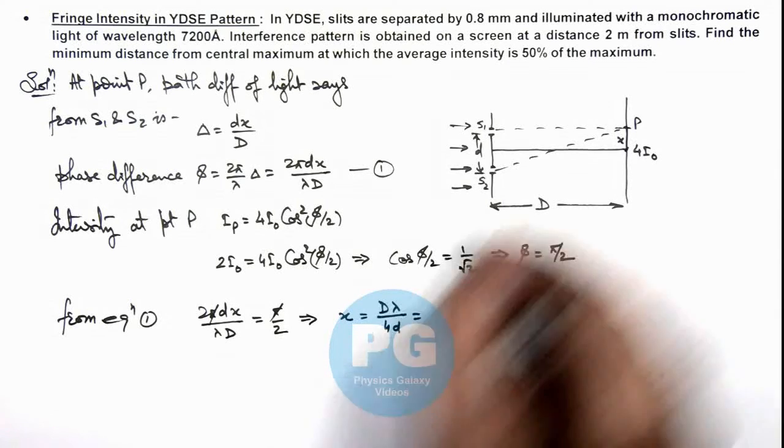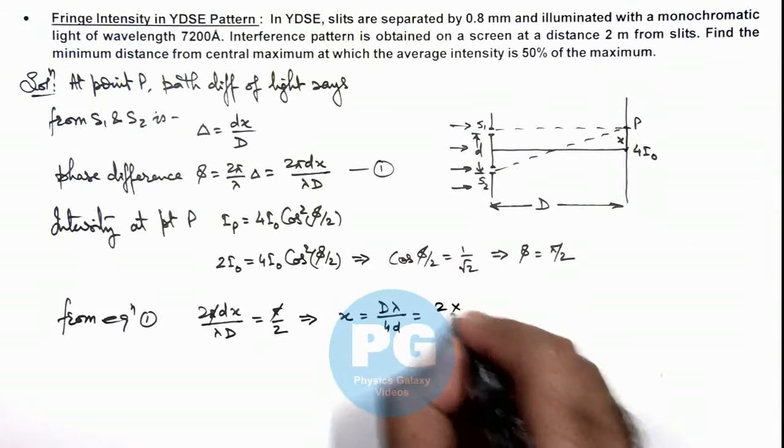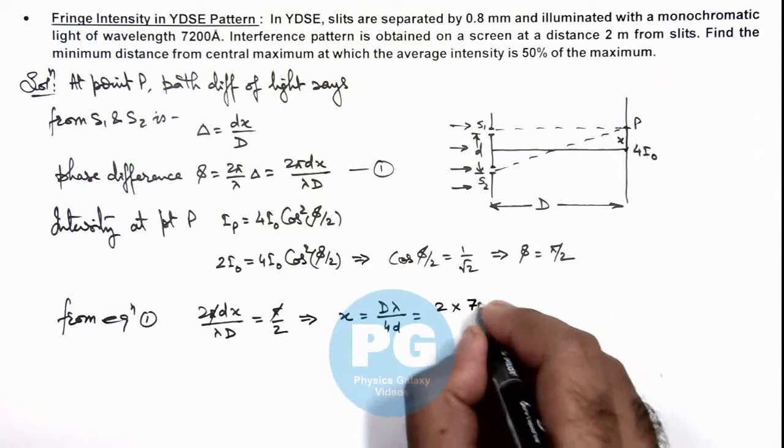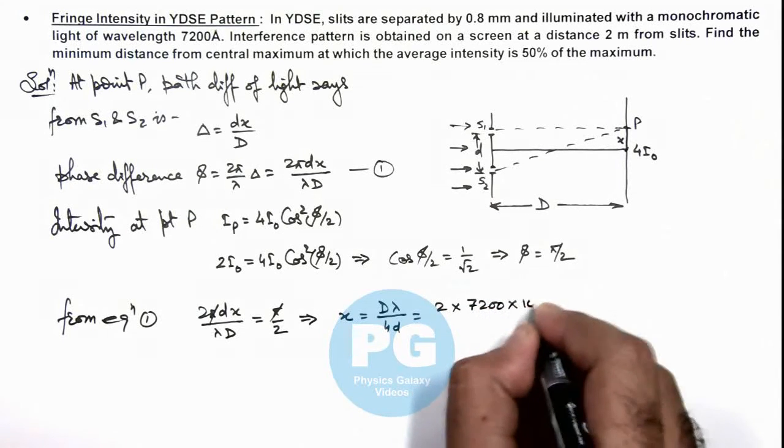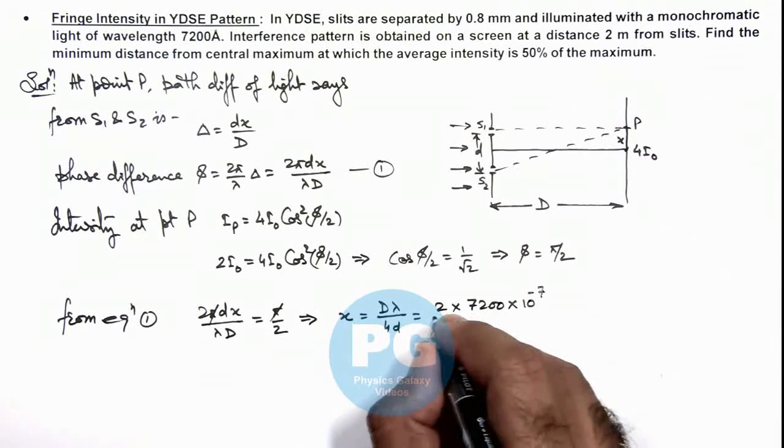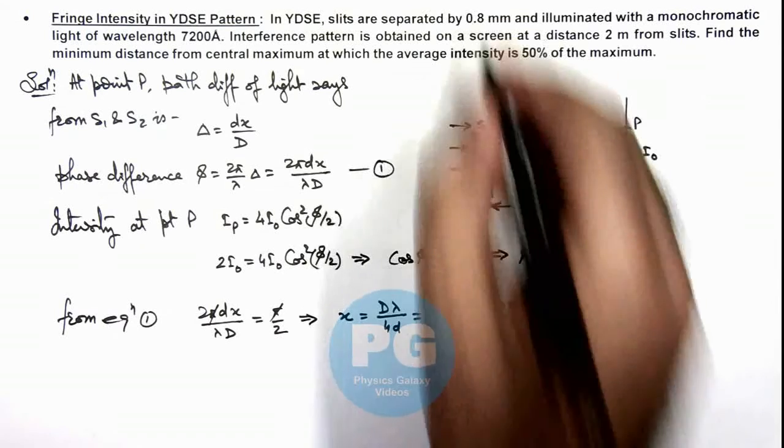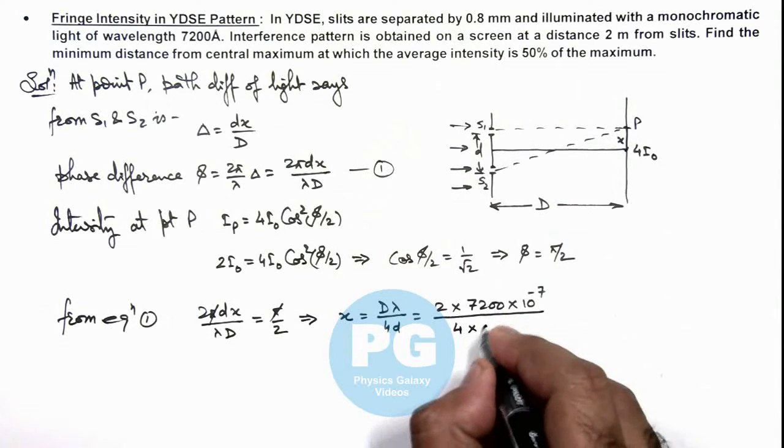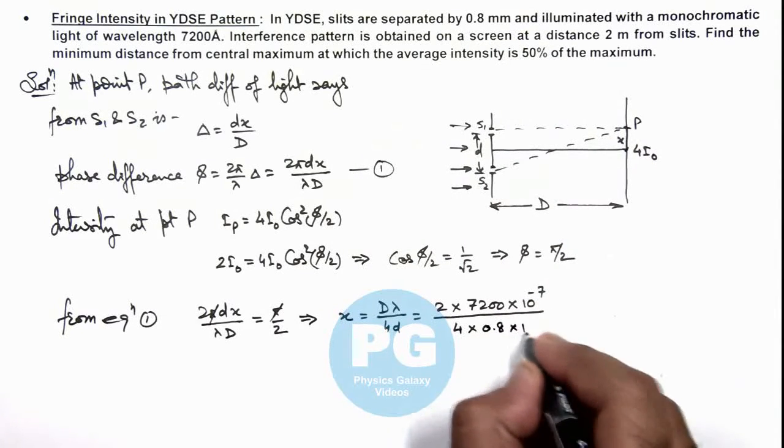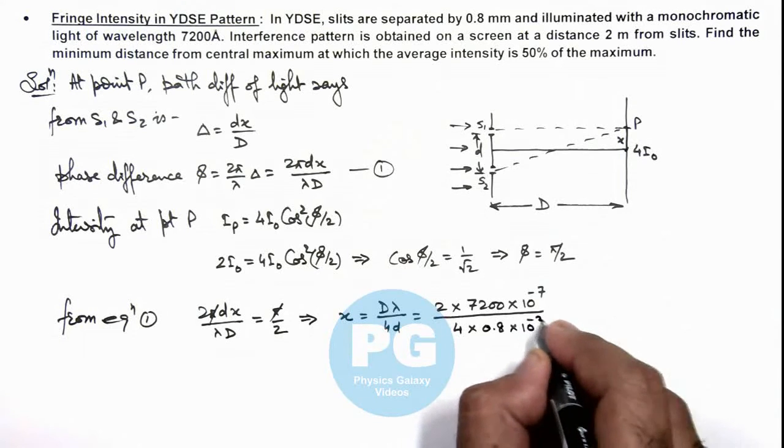If we substitute the values, we are having capital D is 2 meters multiplied by value of wavelength is 7200 into 10⁻⁷, divided by 4 times small d, the separation between slits is 0.8 mm, that is 0.8 into 10⁻³ meter.